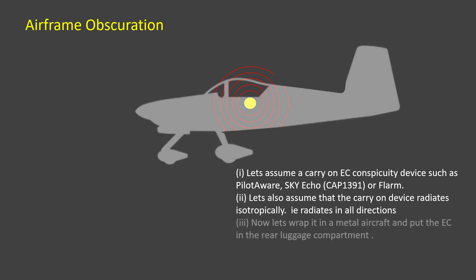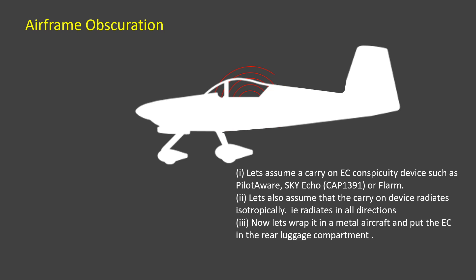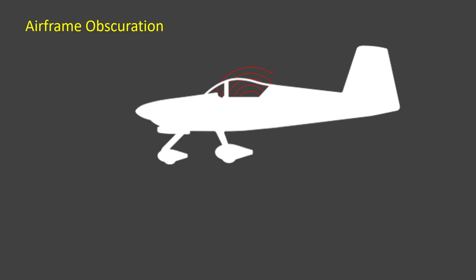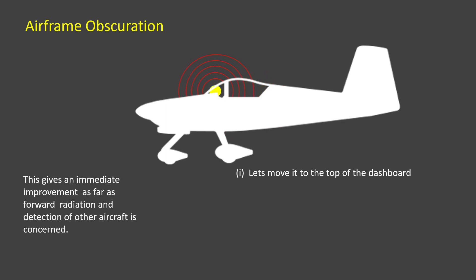Now let's wrap a metal aeroplane around the device, which has been poorly sited on the back luggage compartment. You will see that the majority of transmitting signals are obscured by the airframe and the device will perform very badly. To overcome this, most carry-on devices should be placed on the dashboard or, if possible, equipped with remote internal antennas placed in the cockpit with a better outside view. This is much better, although there will still be obscuration to the rear and somewhat downwards.